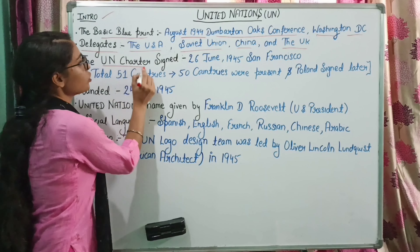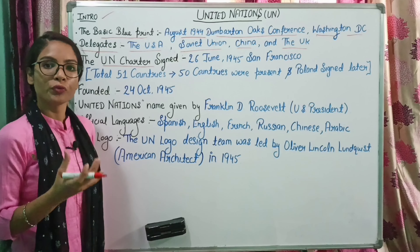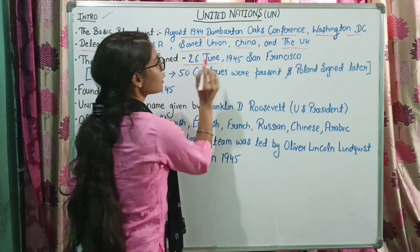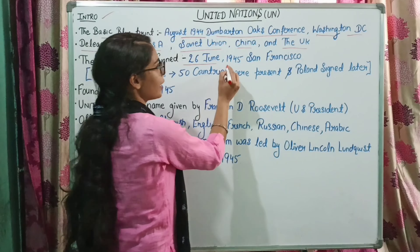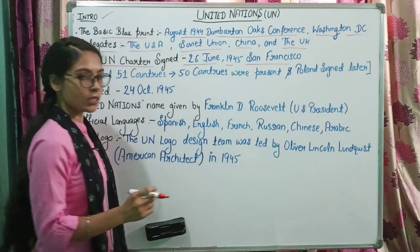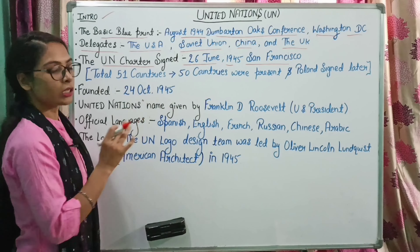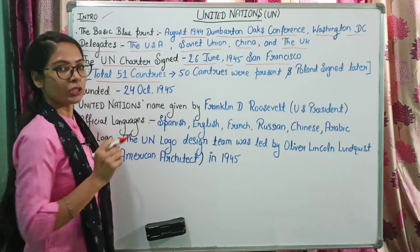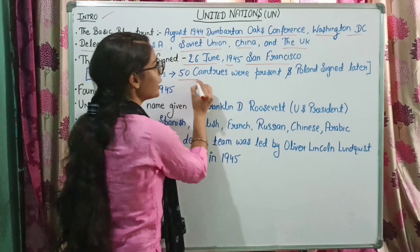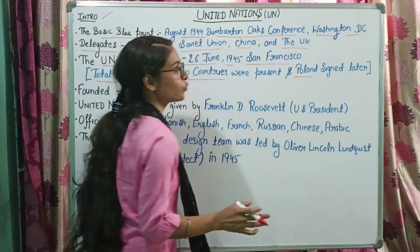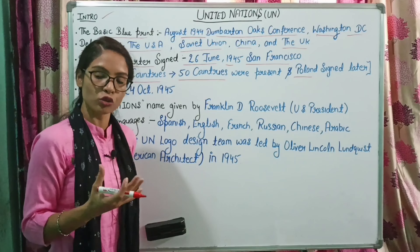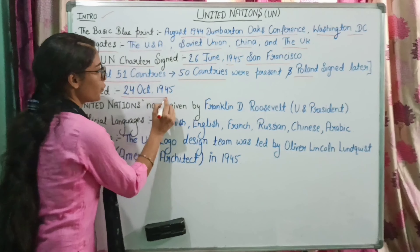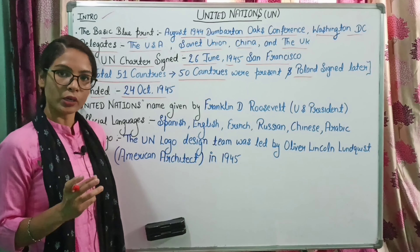United Nations का जो Charter officially sign किया गया था, वो 26th June 1945 को San Francisco में किया गया था. जब ये Charter sign किया गया, उस वक्त total 51 countries थे, लेकिन present उस time पर 50 countries थे. Poland उस वक्त नहीं था, इसलिए Poland ने इस document पर बाद में sign किया था. United Nations की स्थापना 24th October 1945 को की गई थी.